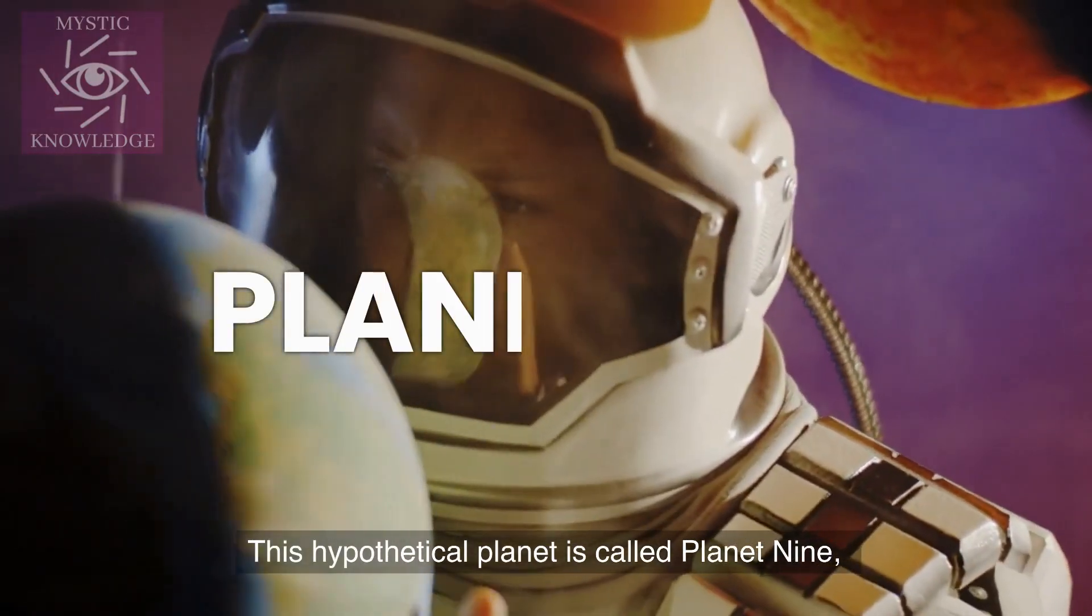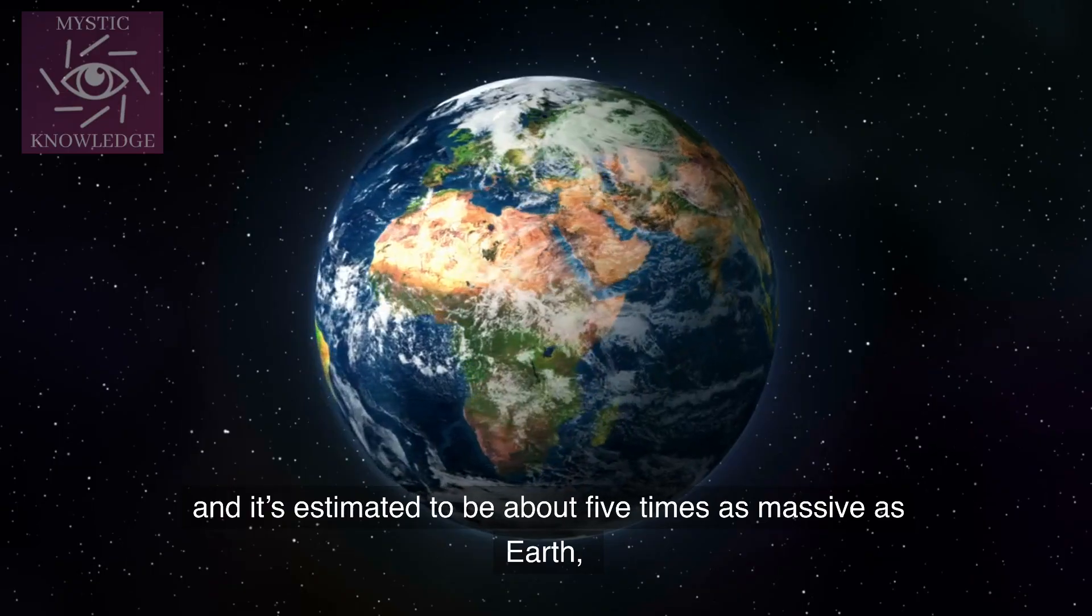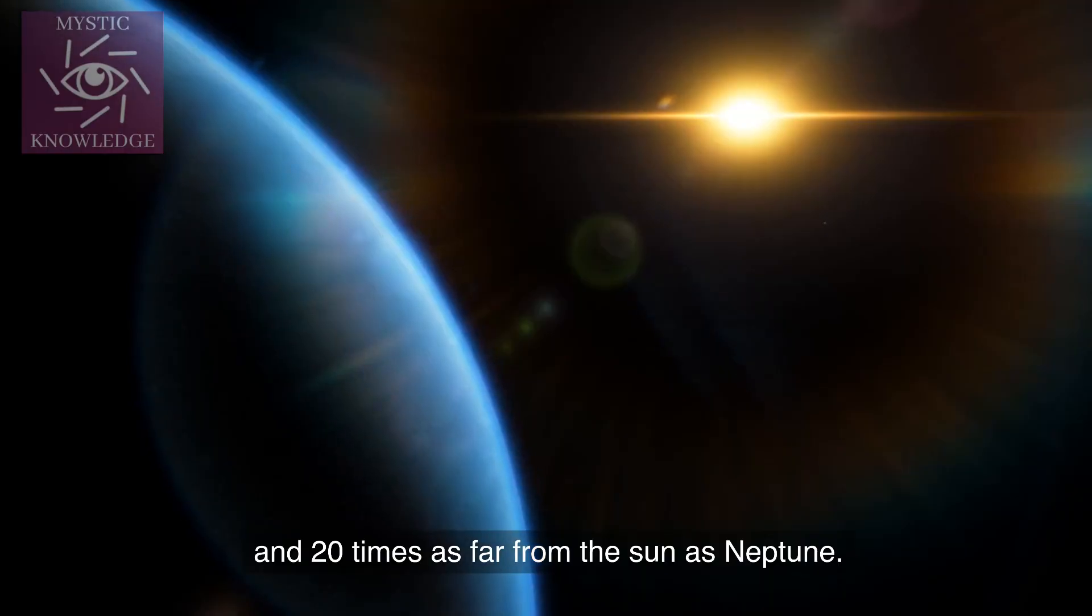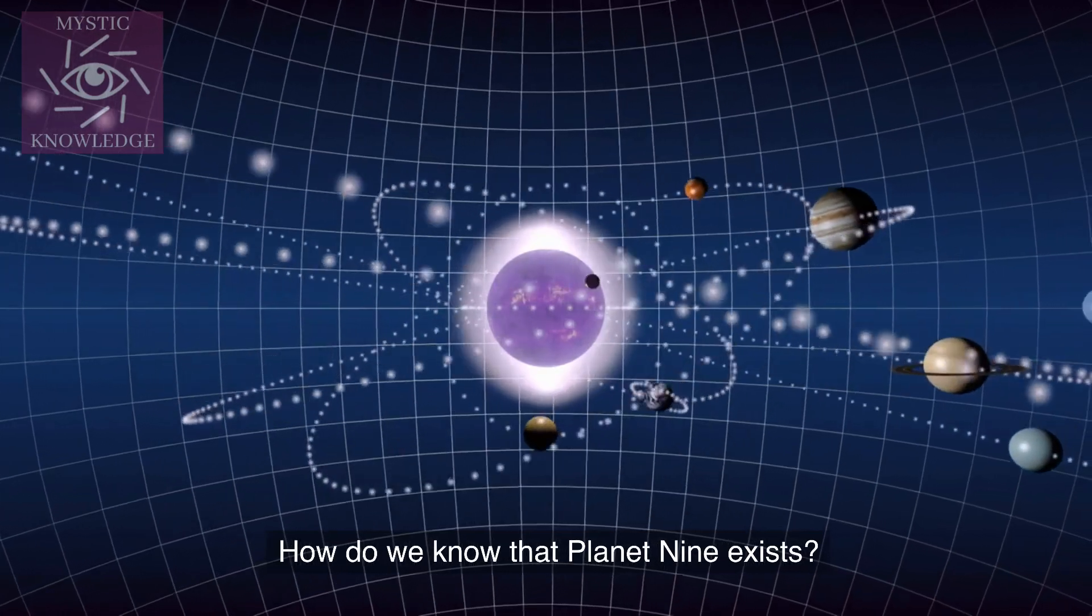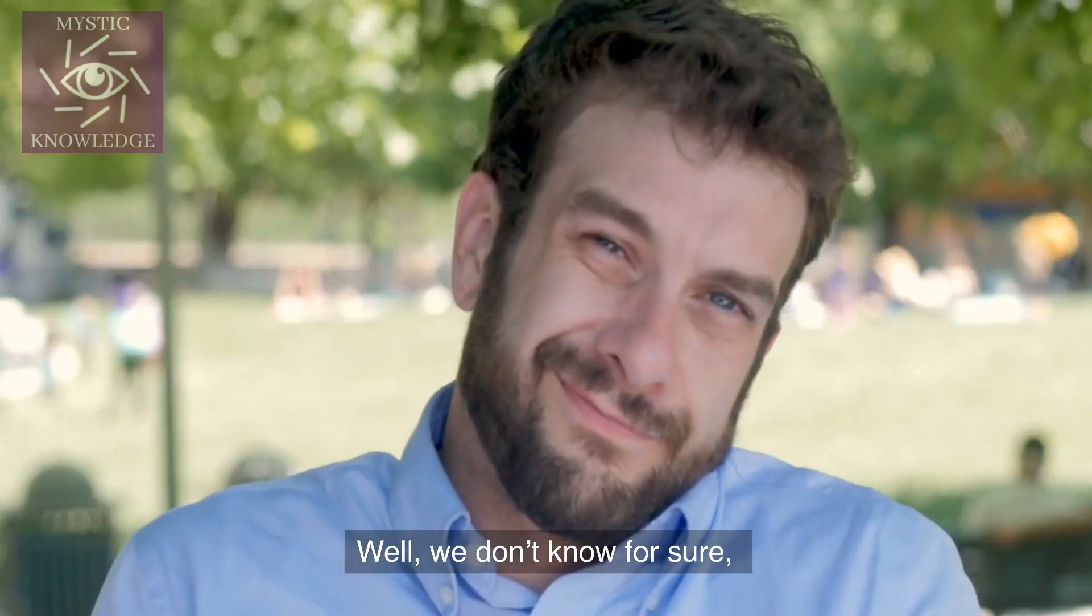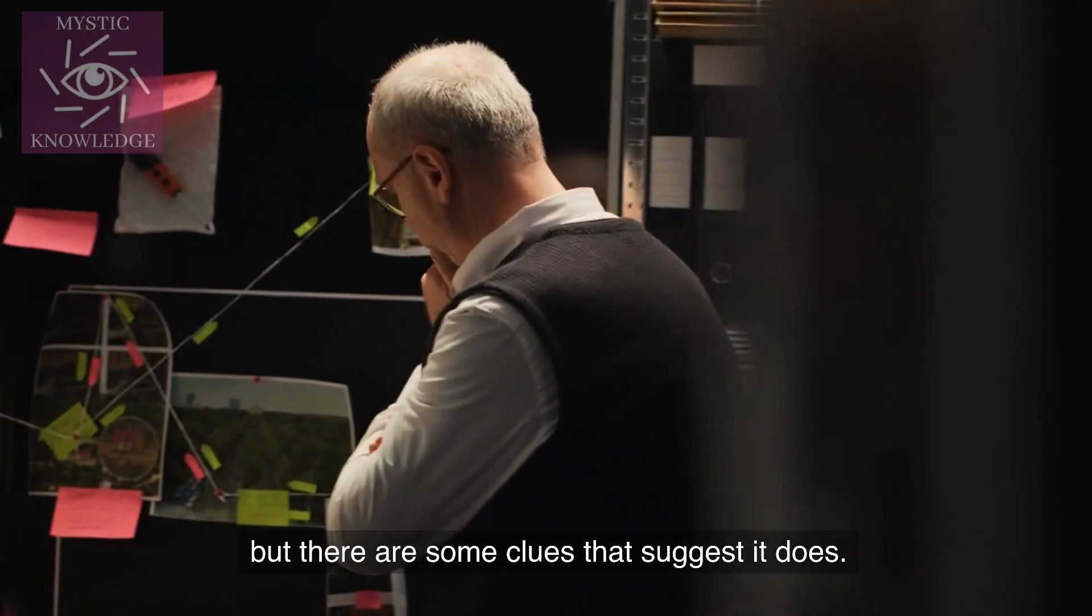This hypothetical planet is called Planet 9, and it's estimated to be about 5 times as massive as Earth, and 20 times as far from the Sun as Neptune. How do we know that Planet 9 exists? Well, we don't know for sure, but there are some clues that suggest it does.